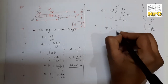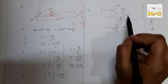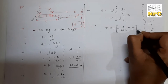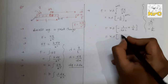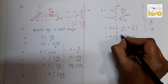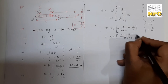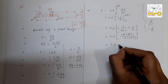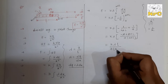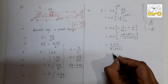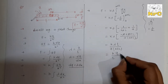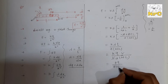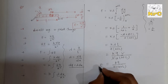Solving with LCM: E = kλ · [a(a+L) - ... ] simplifying gives E = kλ · L / [a(a+L)]. Substituting λ = Q/L: E = kQ/L · L / [a(a+L)], so L cancels, giving the final answer: E = kQ / [a(a+L)]. This is the total electric field at point P due to the conducting wire.